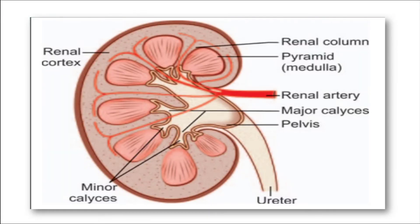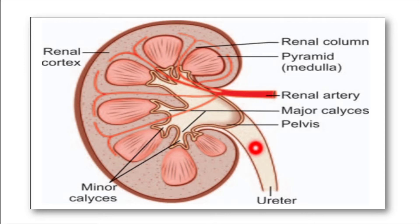This diagram is again demonstrating the renal pyramids, medullary rays, minor and major calyces, renal pelvis, and the ureter — the anatomy of the kidney.